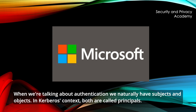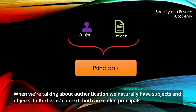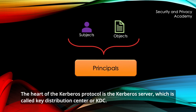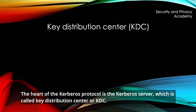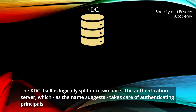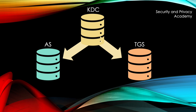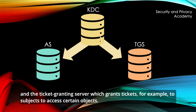When we're talking about authentication, we naturally have subjects and objects. In Kerberos's context, both are called principals. The heart of the Kerberos protocol is the Kerberos server, which is called Key Distribution Center, or KDC. The KDC itself is largely split into two parts: the authentication server, which takes care of authenticating principals, and the ticket-granting server, which grants tickets to subjects for access to certain objects.